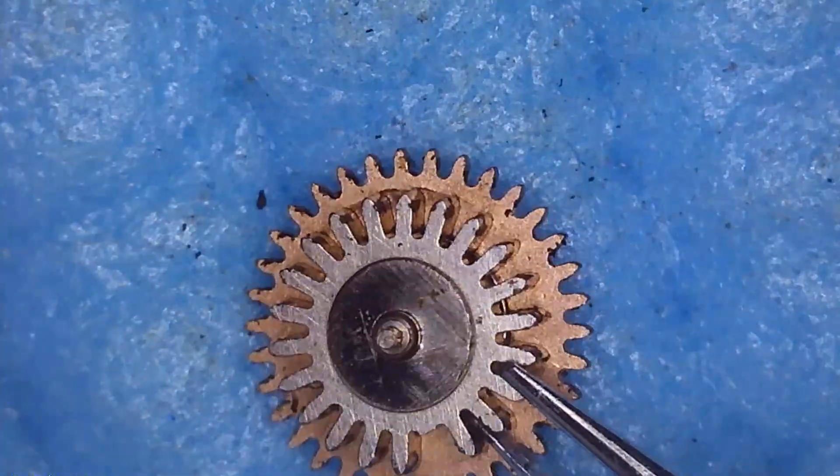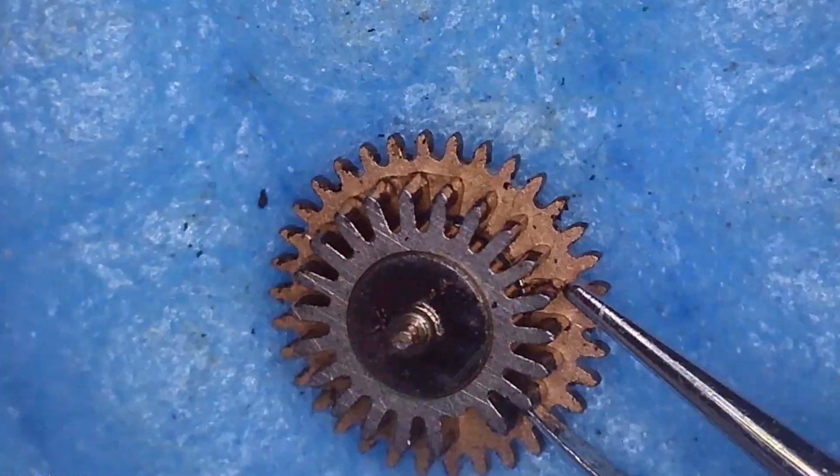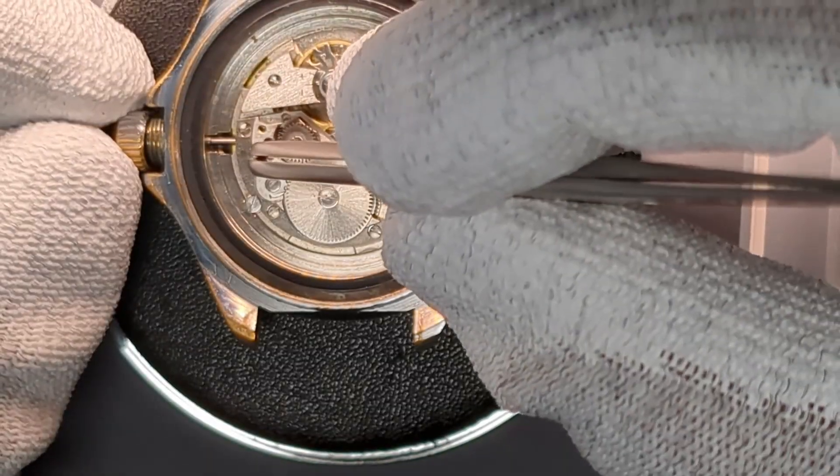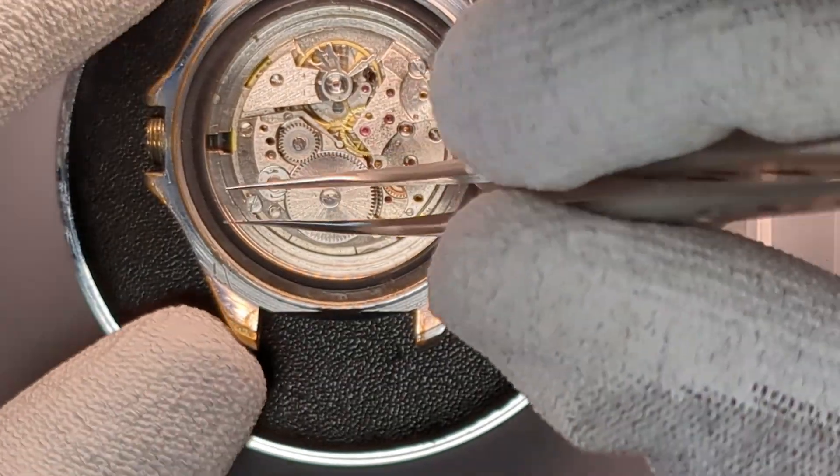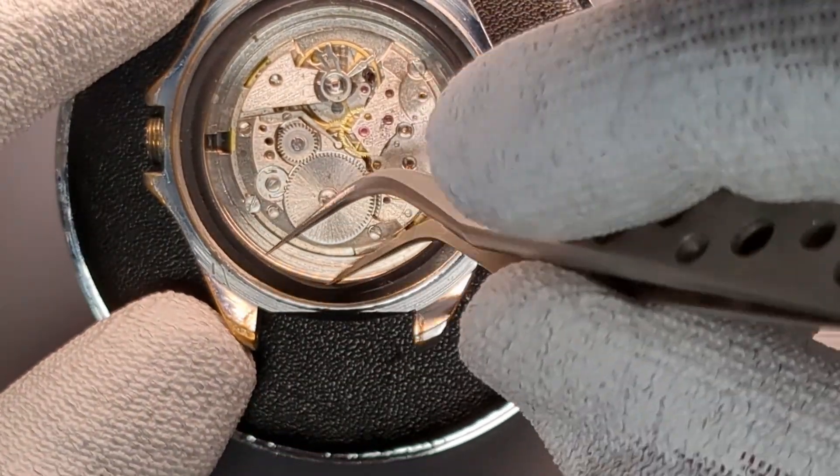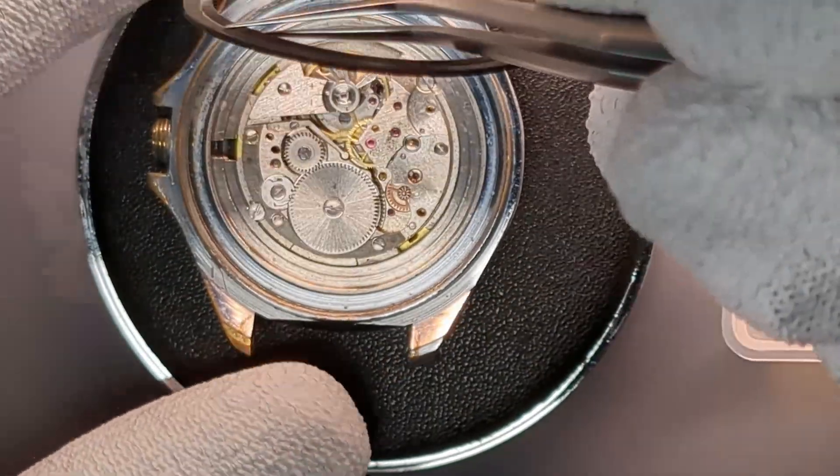Now, let's take a closer look under the microscope. I'm removing the stem by pressing the push button. And the seal, which is in very good condition. Definitely, I can reuse it.